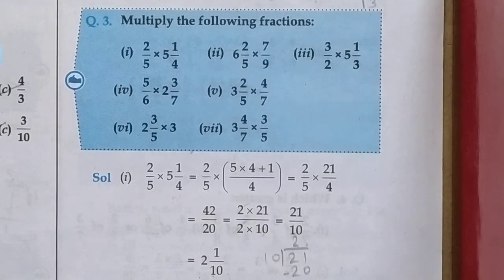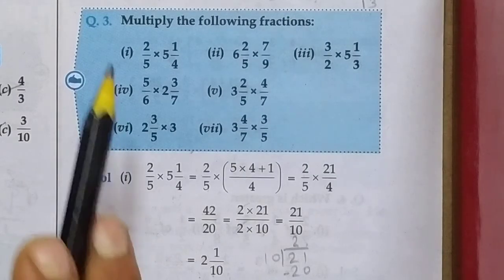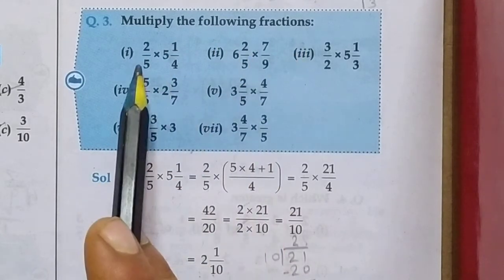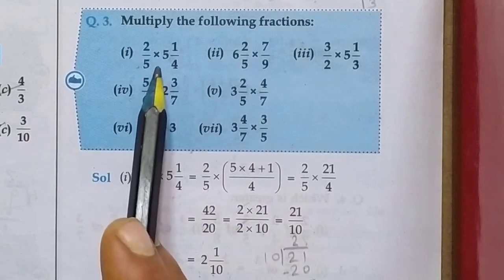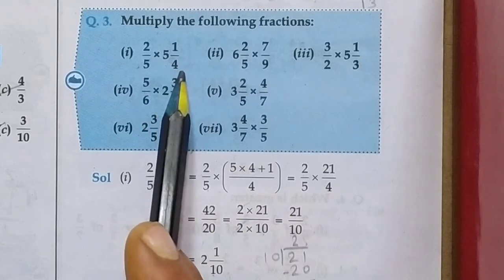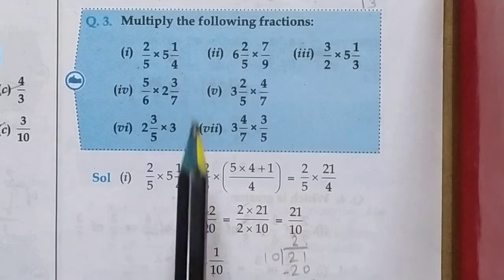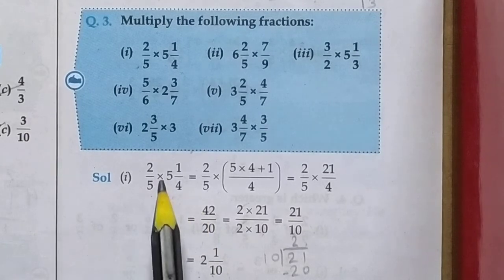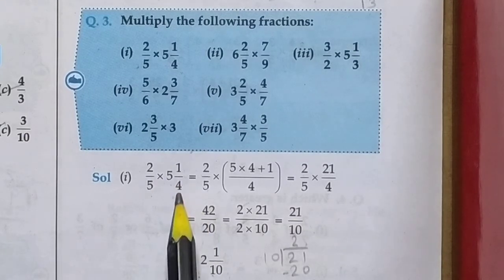Hello students, let us continue exercise 2.3 question 3. Multiply the following fractions: first, 2 upon 5 multiply 5 whole 1 upon 4.